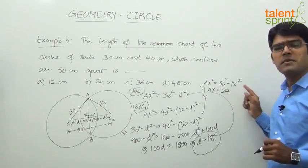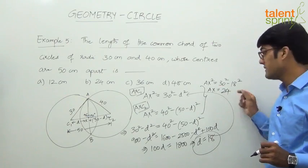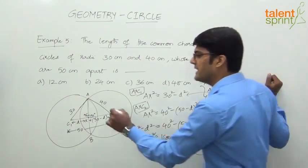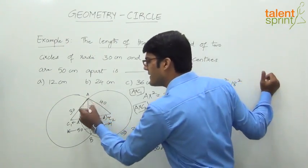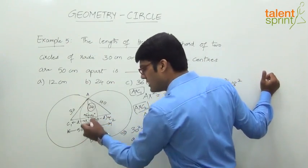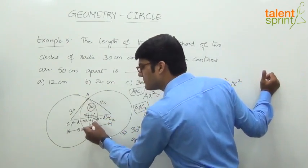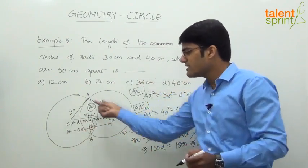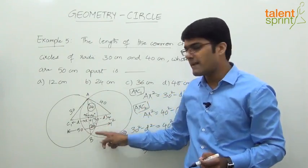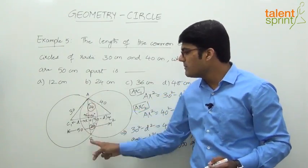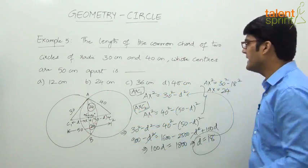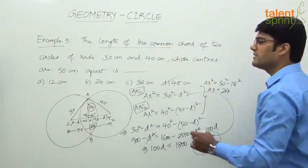So AX equals 24. This length AX is 24. The bottom half — XB — will also be 24 by symmetry, since the same calculation can be replicated on the other side. Therefore the length of chord AB equals 24 plus 24, which is 48 centimeters — option D.